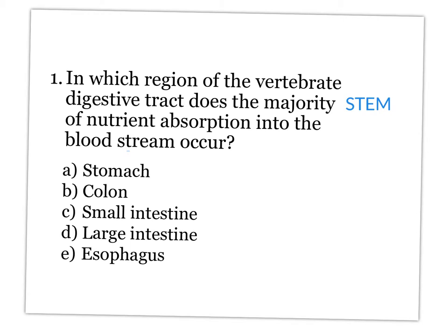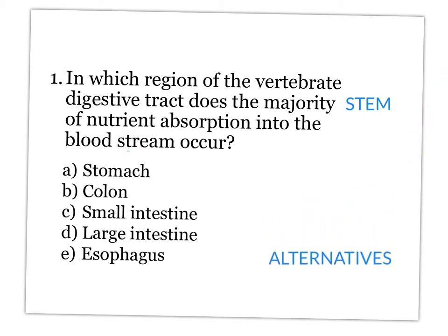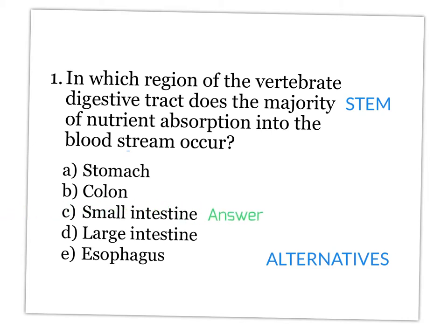Following the stem is a list of alternatives, and within those alternatives is the correct answer — which in this case is C, the small intestine — but then also a list of other possibilities.